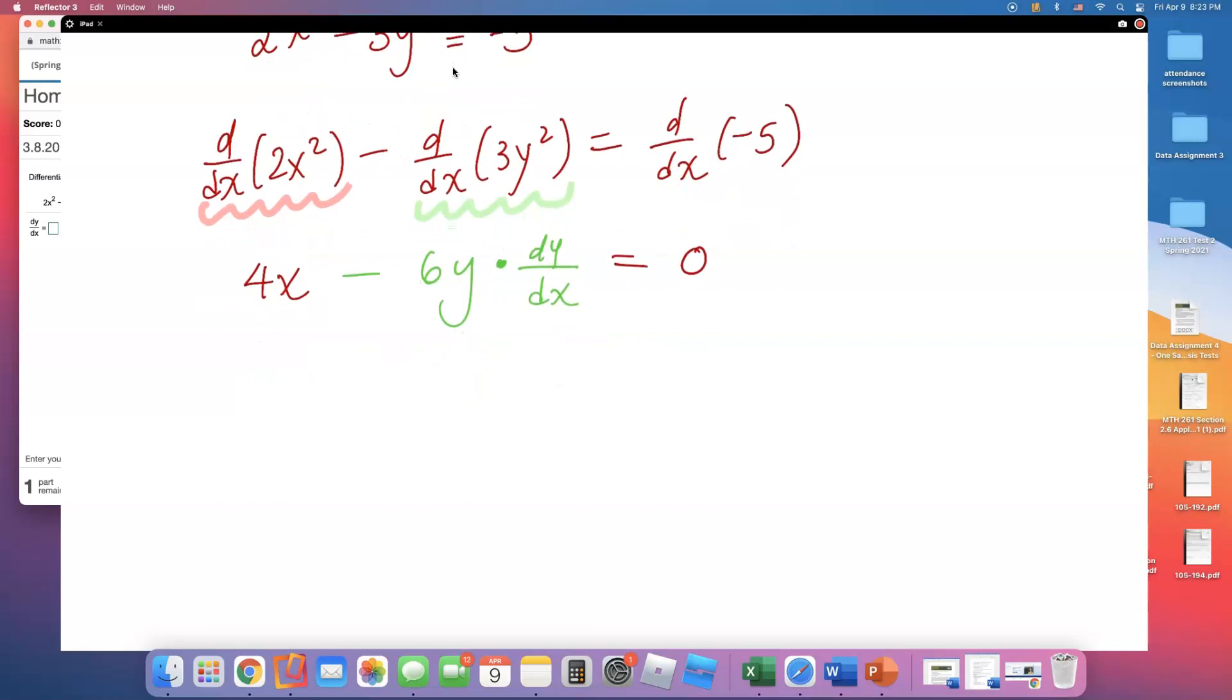I'm going to solve this equation for dy/dx. So first, I will subtract 4x from both sides. That will get me negative 6y times dy/dx equals negative 4x.